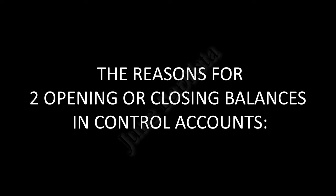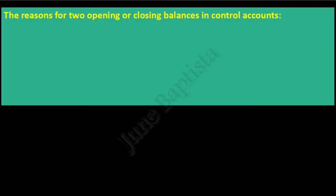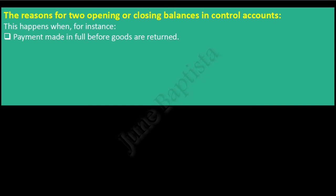The reasons for two opening or closing balances in control accounts. This happens when, for instance, payment is made in full before goods are returned. The business may have paid its suppliers in full and then decided to return goods. This will be represented by a debit balance in the purchaser's ledger control account, as the business is now a debtor of the suppliers. On the other hand, if a customer has paid in full before returning goods to the business, this will be represented by a credit balance in the sales ledger control account, as the customer is now a creditor of the business.